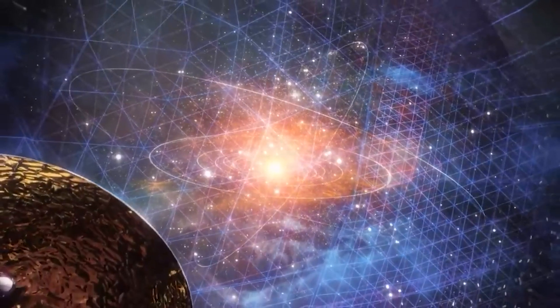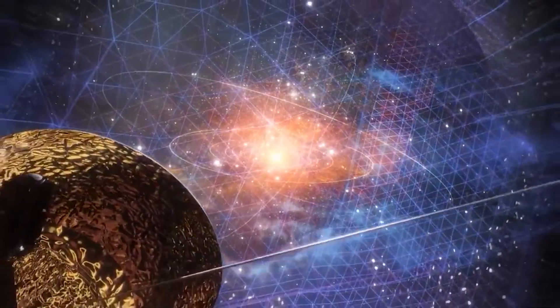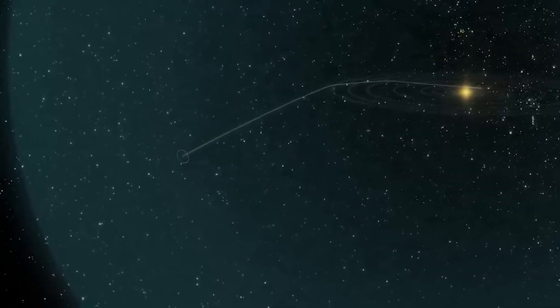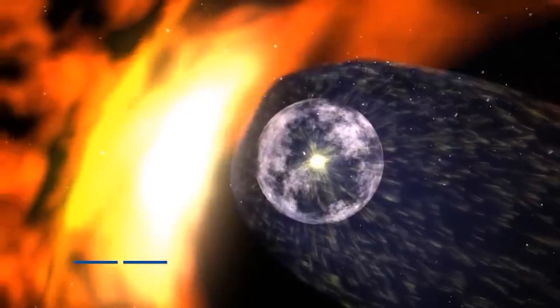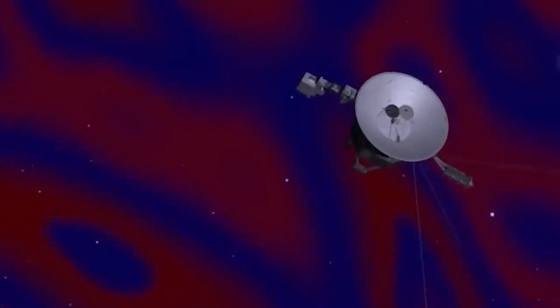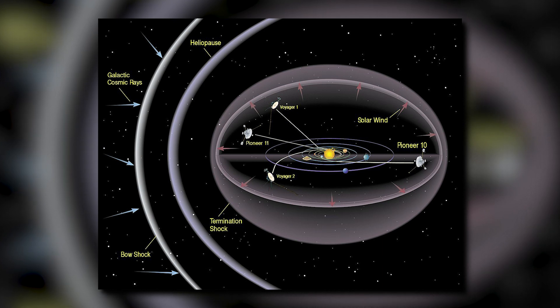Before we can fully appreciate the significance of this discovery, it is vital to comprehend the heliosphere and how Voyager 1 was able to escape it. The heliosphere is the region of space around the Sun that is dominated by the solar wind and magnetic field. The solar wind creates a protective ring around the solar system.